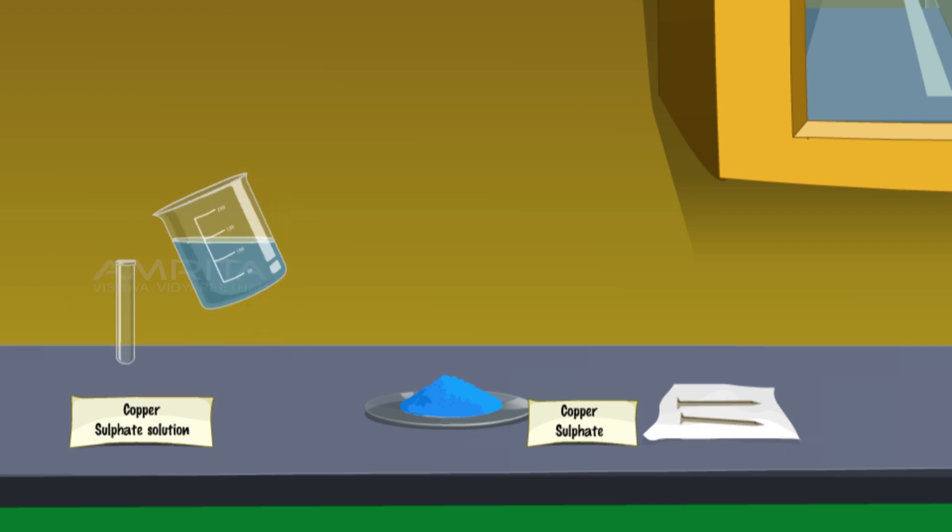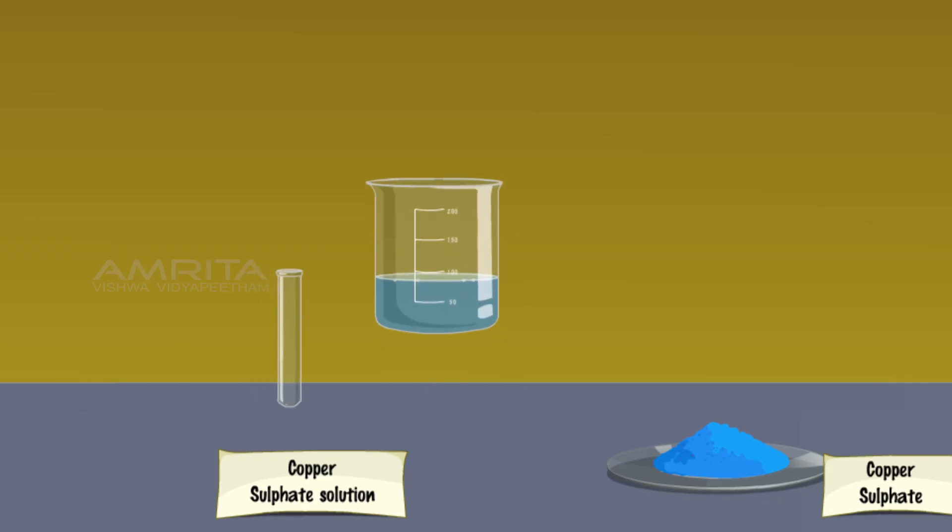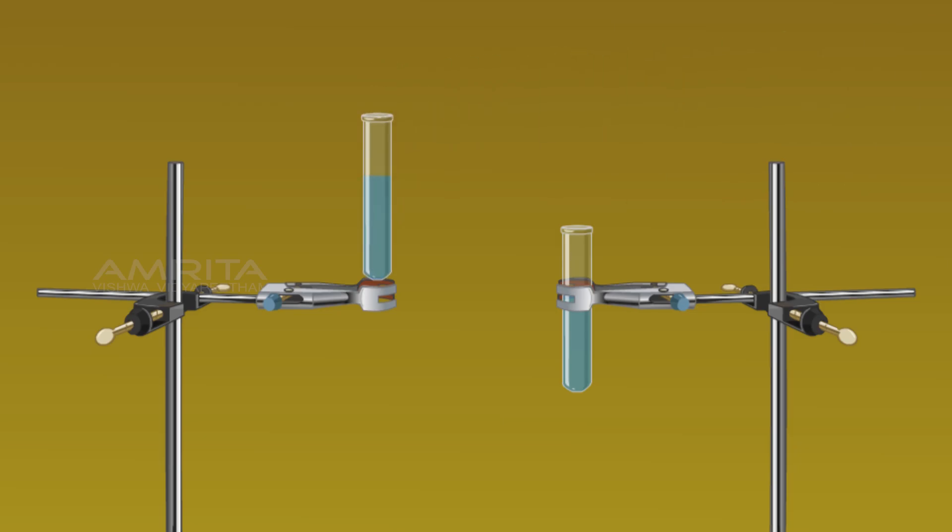Pour sufficient quantity of copper sulphate into a test tube. Clamp the test tube to a stand. Then pour sufficient quantity of copper sulphate into another test tube. Clamp this test tube to another stand.